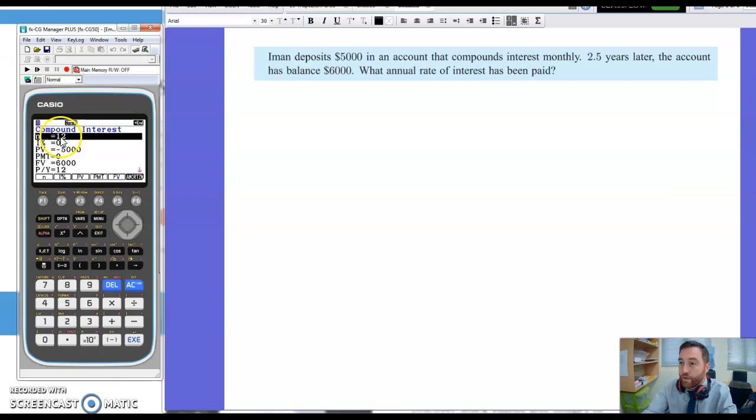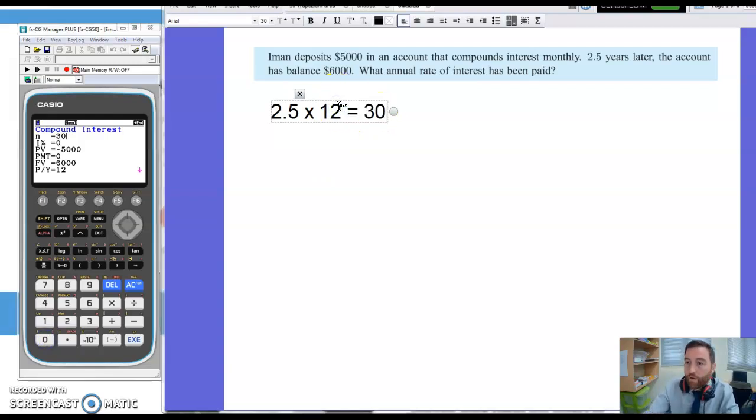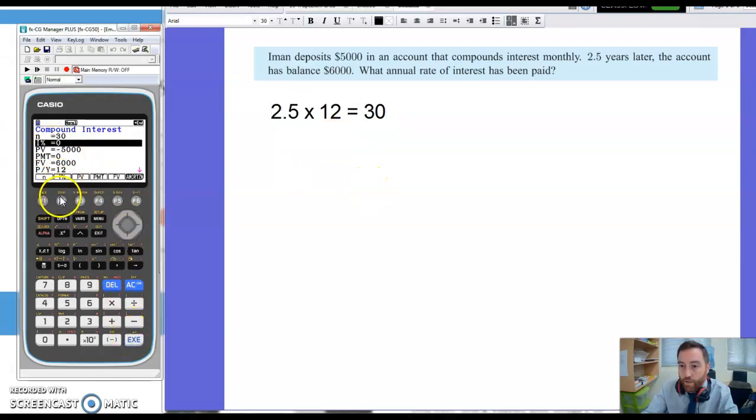My number of compounding periods will be 2.5 years times 12 months a year. Well, two years is 24 plus half a year is another six. I think that must be 30. So N equals 30. And we are calculating the I%, so let's click on that. F2.